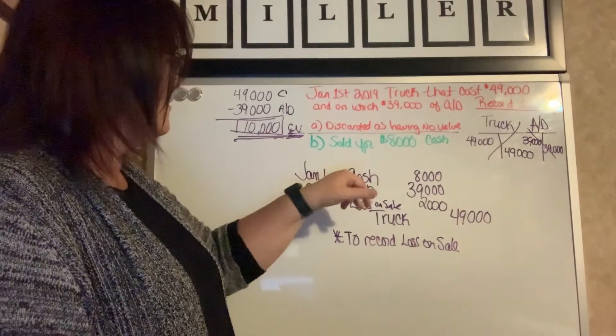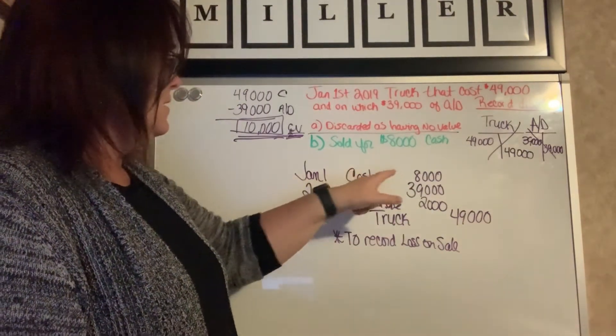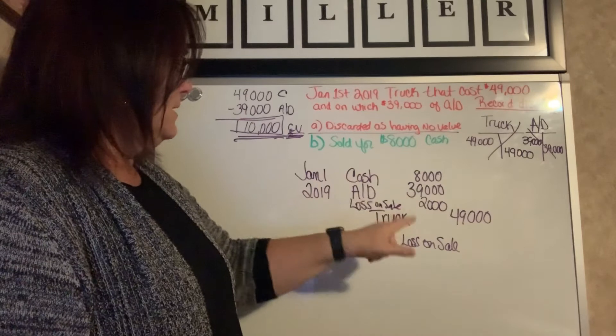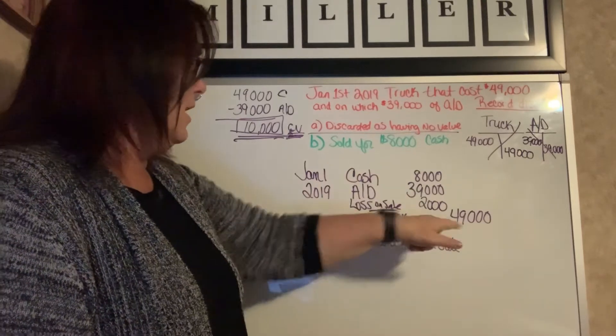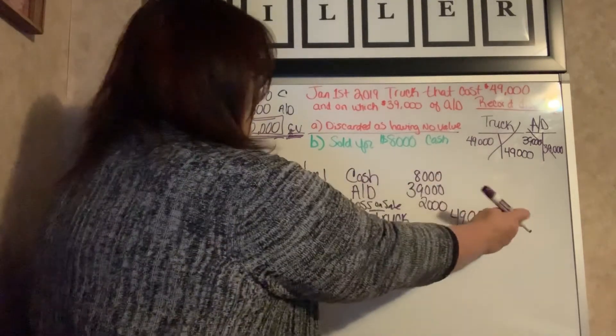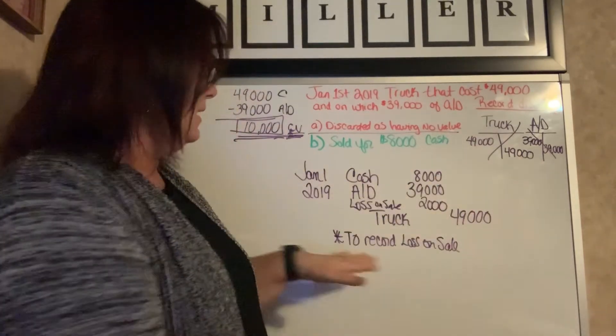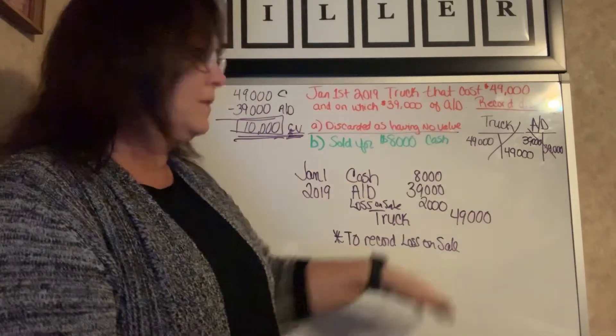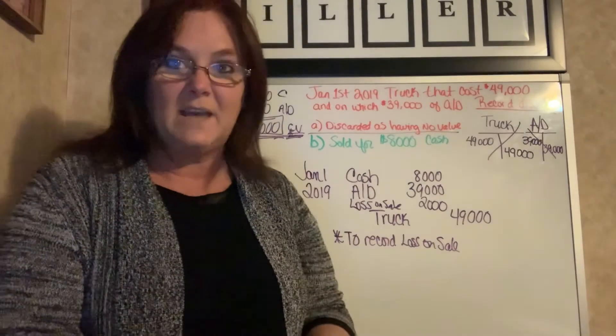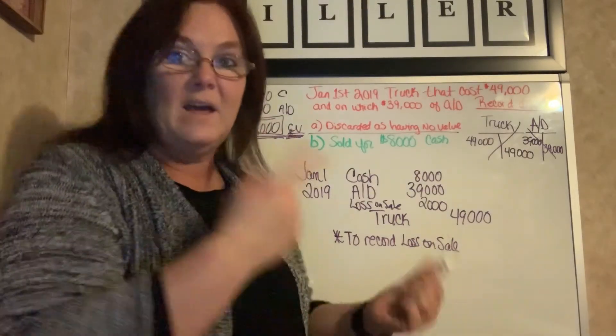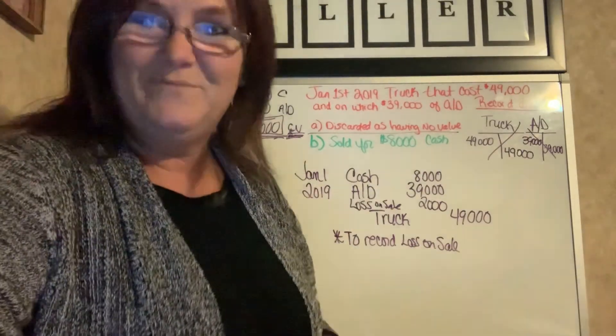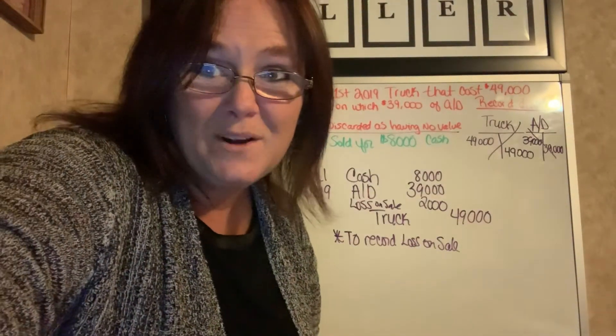So we have our date, our debit, our credit — our debit side matches our credit side — and to record the loss on sale. That's it for the second one. See you in the third one.